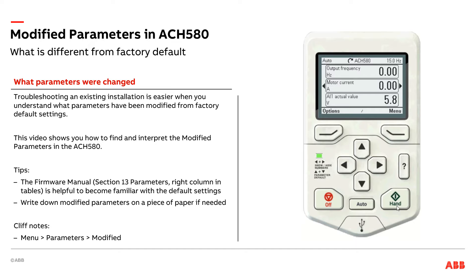Depending on the drive manufacturer, your preference, or your experience and training, you might call these change parameters. In the ACH580, they are called modified parameters. What these are, are parameters that are different than the factory default settings. This is a really good tool to use when you're walking up to a drive for the first time and you're going to be troubleshooting, or maybe finishing commissioning and you want to understand exactly how this drive is programmed. If you have an idea of what the factory default settings are, all you need to do is navigate over to modified parameters and get a really quick list that walks you through what is different. Let's go ahead and do that and take a look.